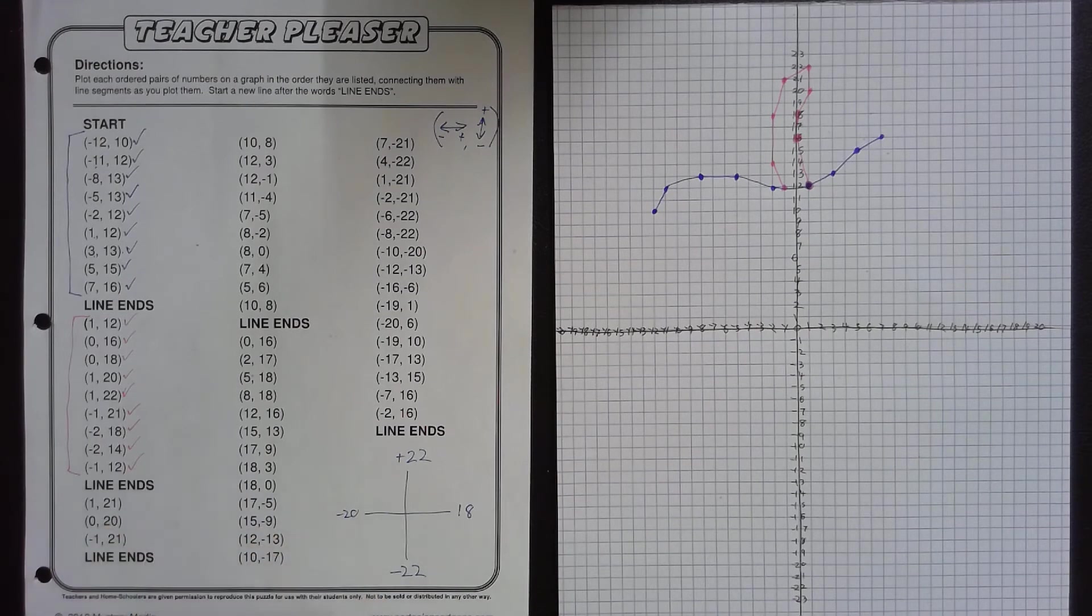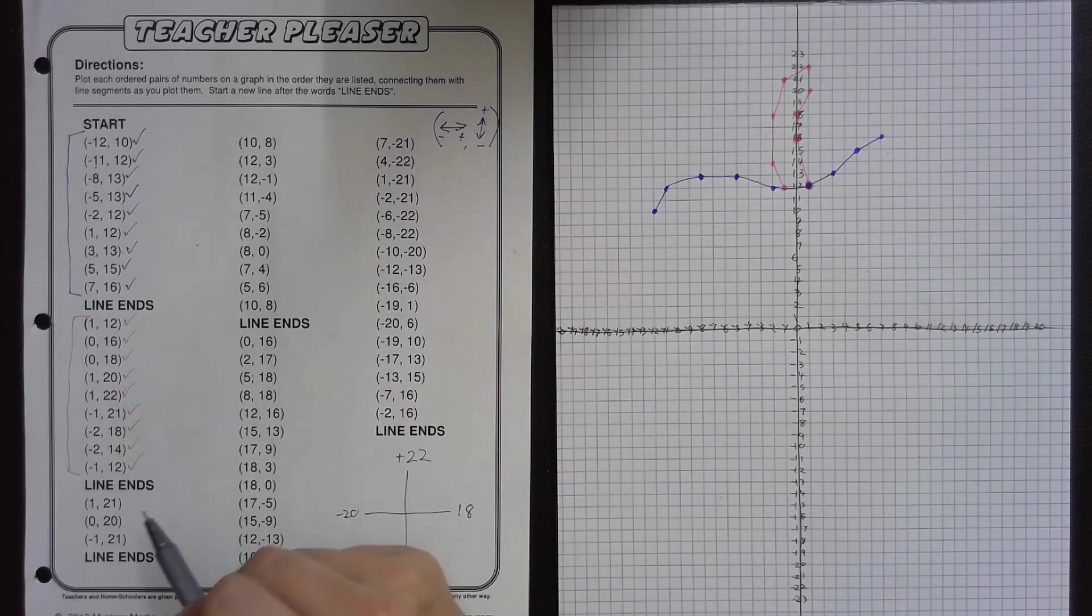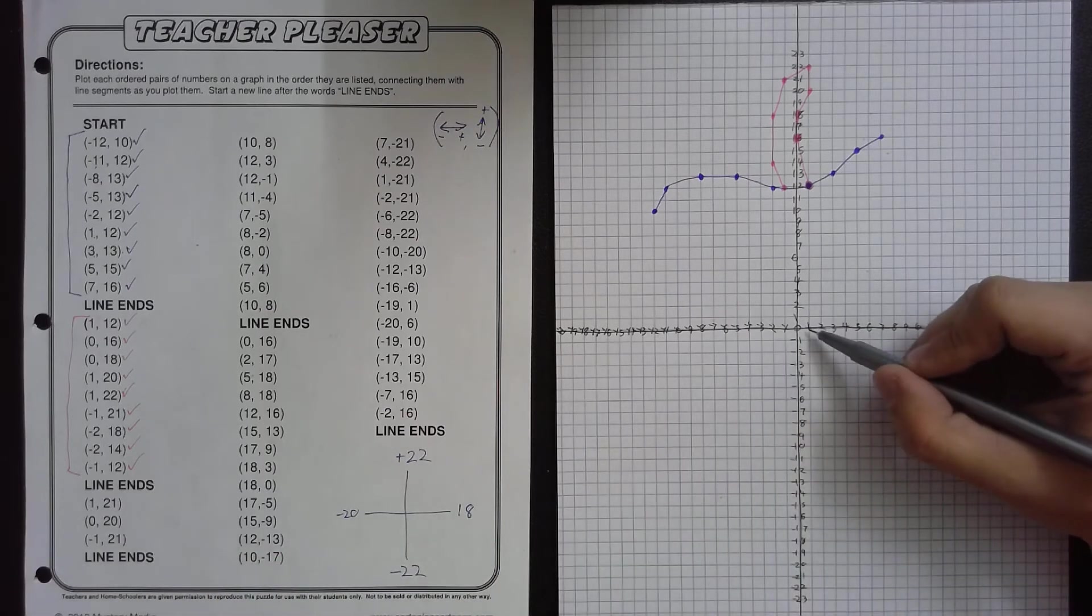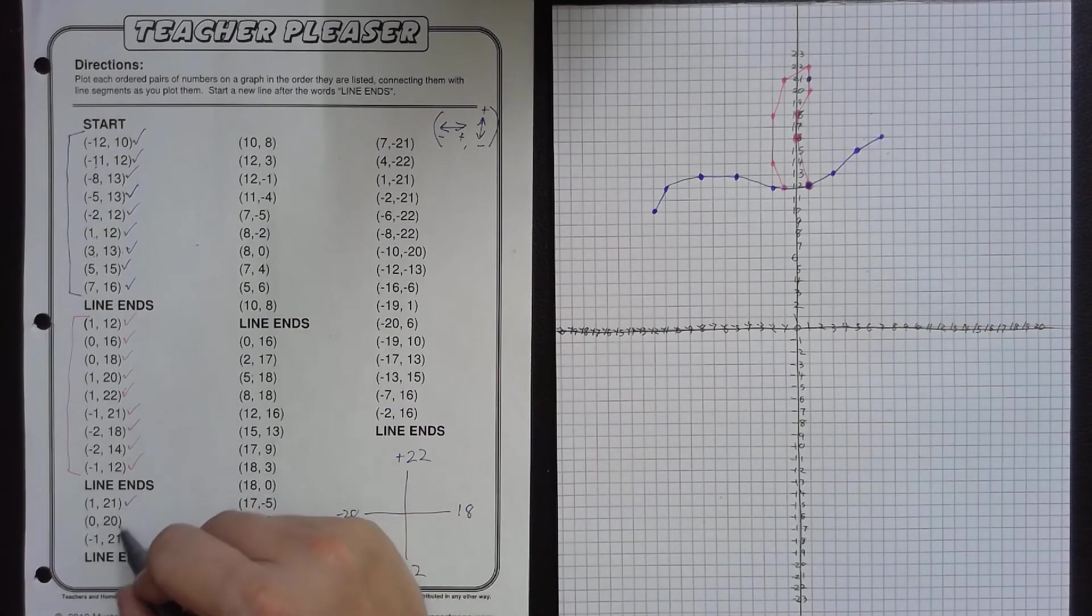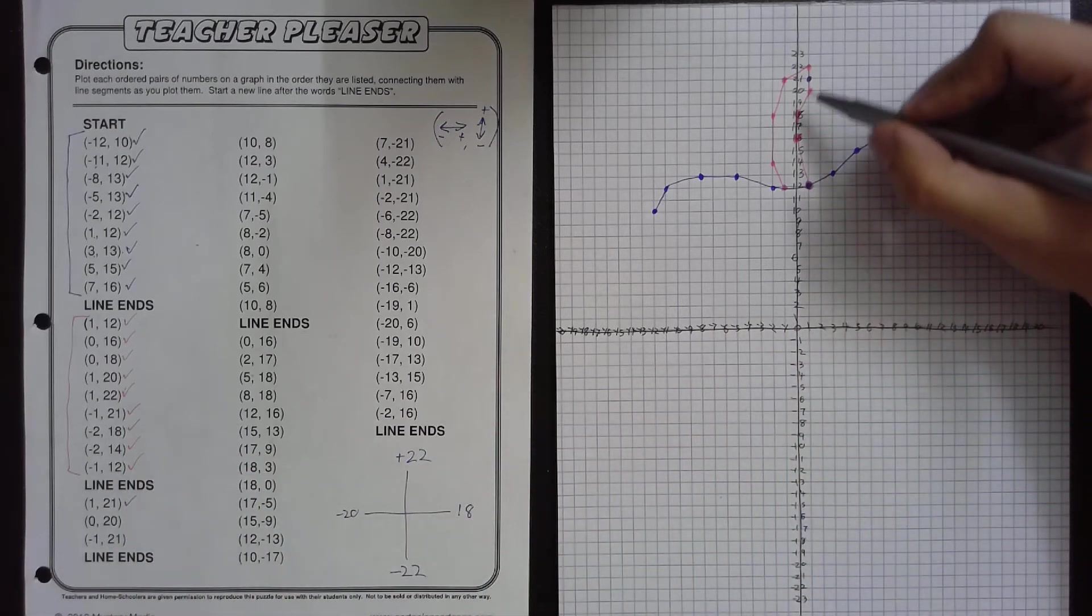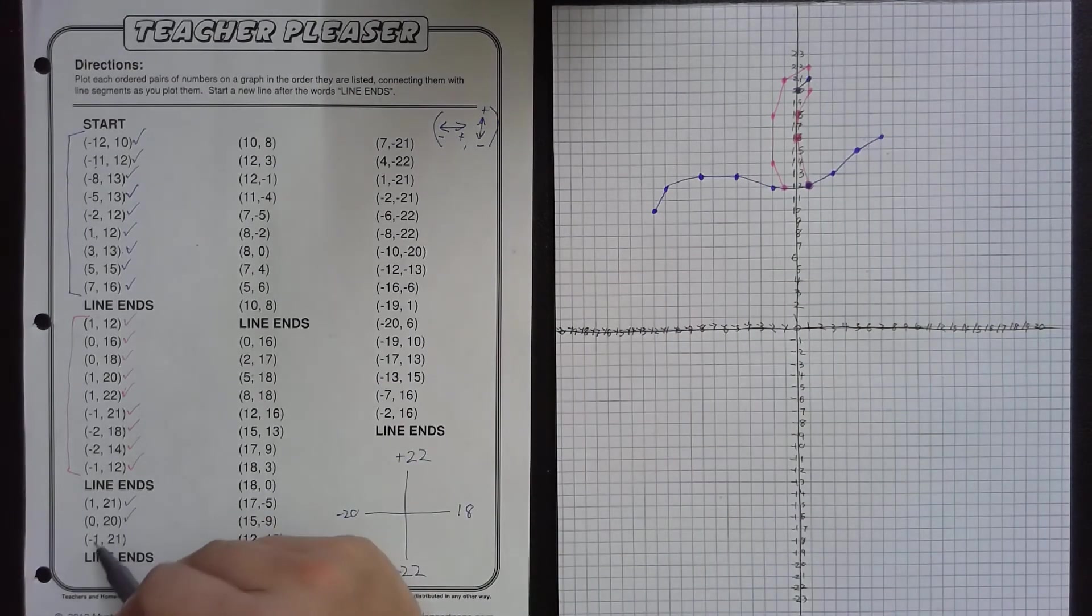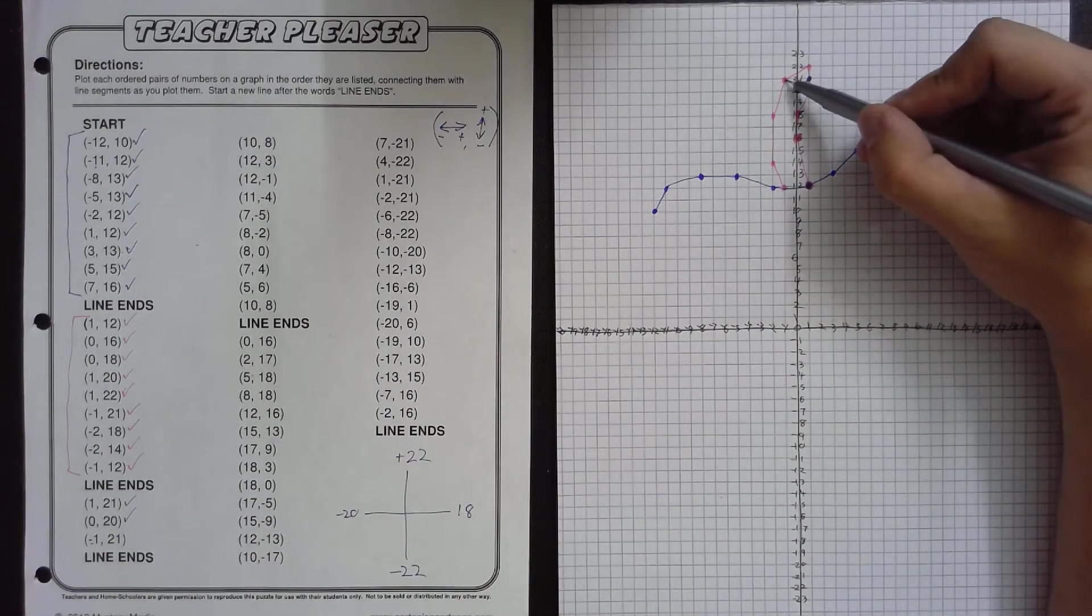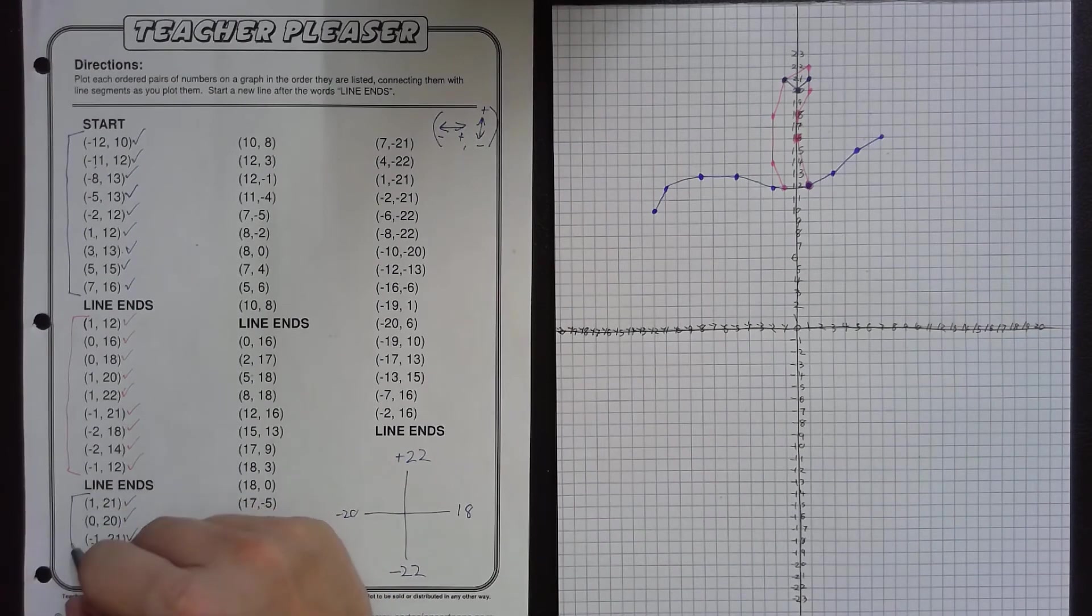This next smaller sequence I'm going to do in purple. And this one is just 3 points. And 2 of them we've already done before. This one is at 1, 21. So 1 to the right and 21 up. It's going to be right here. Then we have 0, 20, which is going to be 0 left or right and 20 straight up. Let's connect those. And then negative 1, 21, which this coordinate we already have. Just color it again and connect. So we are done with this sequence.